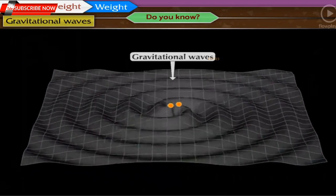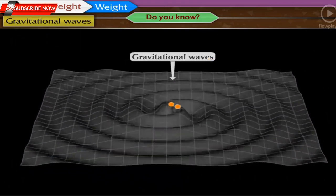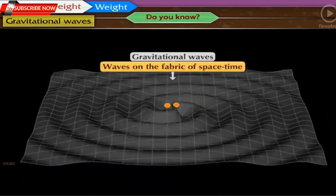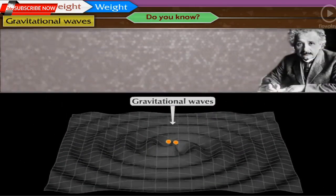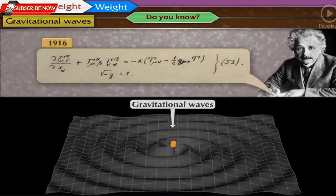Gravitational waves are a very different type of waves. They have been called the waves on the fabric of space-time. The existence of these waves was predicted by Einstein in 1916.